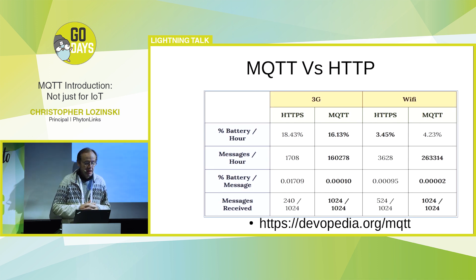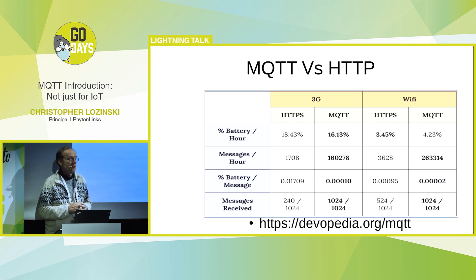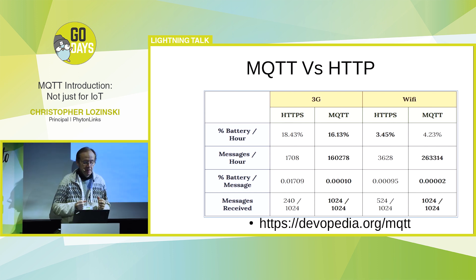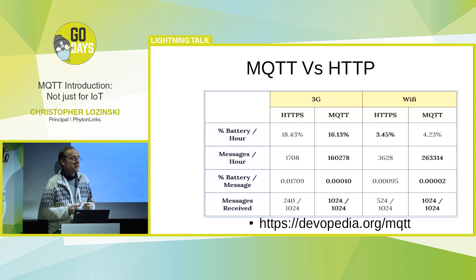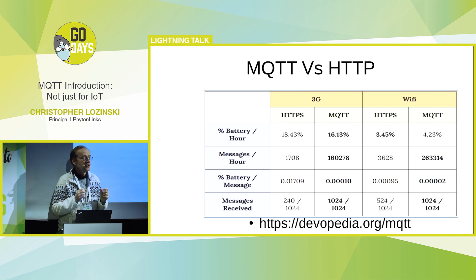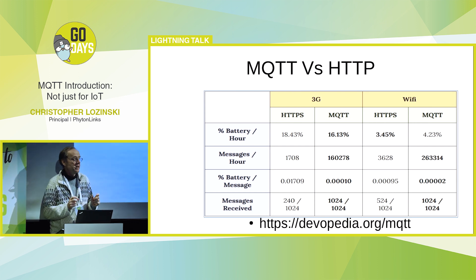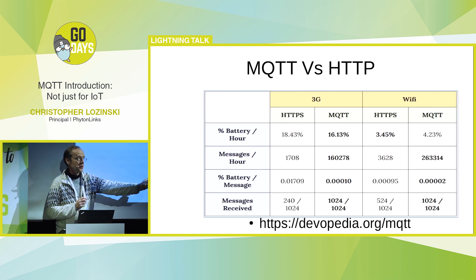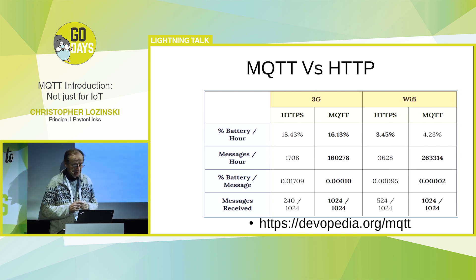It just works. A lot of people, when they want to connect two machines, their first choice is HTTP, but MQTT is much more efficient than HTTP. If I want to send just a temperature reading across the network, I can just send a couple of bytes — a byte of what the temperature is.